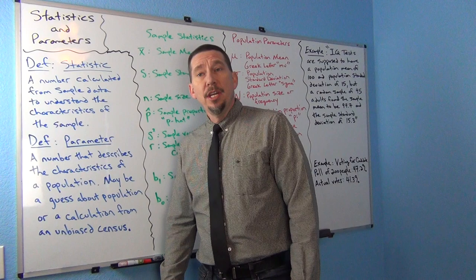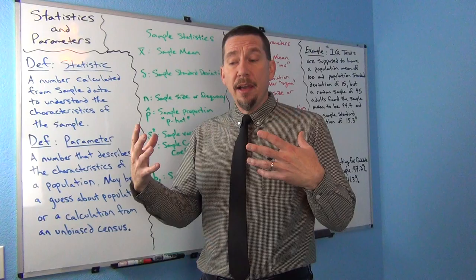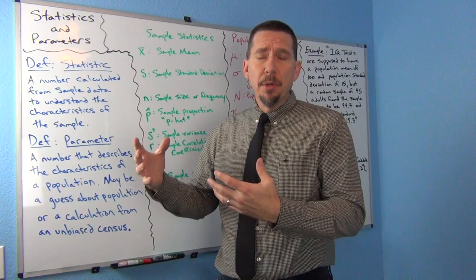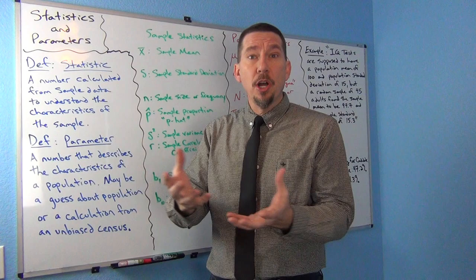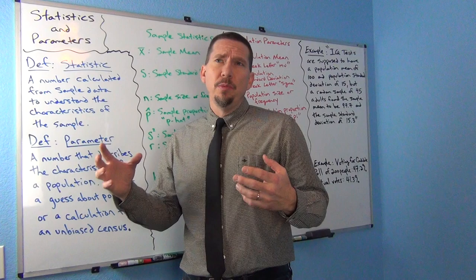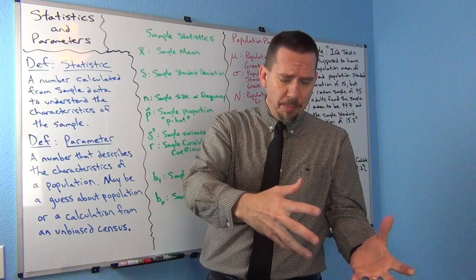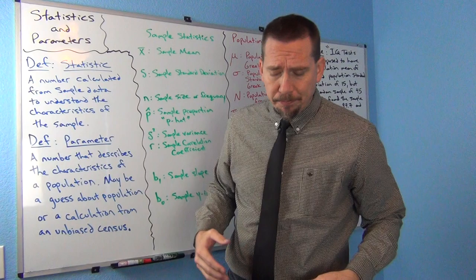We've talked already about having a population you're trying to figure out — maybe millions of people — but you probably can't take data from all of them. You have to collect a sample, a small subgroup of the population. In statistics, we deal a lot with samples versus populations, trying to figure out what's going on in the population using only sample data.